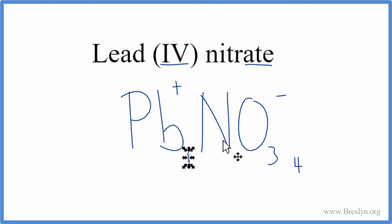We don't write the one by convention, we can get rid of these charges here, and then we need to have parentheses around our nitrate ion, because we have four of them. So we'll put our parentheses around the nitrate, and that's the formula for lead four nitrate.